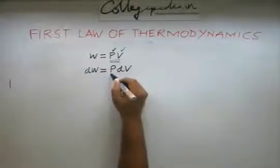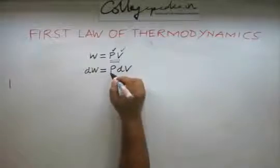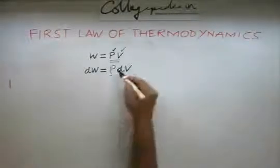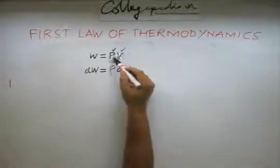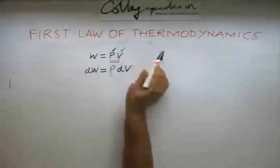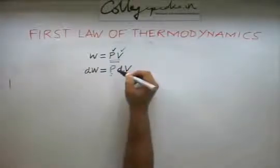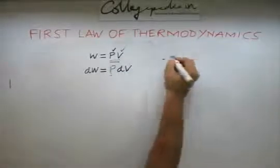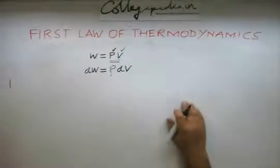Let us say dW is equal to PdV. The reason why I didn't differentiate P is for the time being, I am assuming that P remains same. Had P been changing, I could have said that PV differentiated will give you PdV plus VdP. For the time being, I am saying that pressure is not changing. Other way of looking at it is, you remember the basic piston-cylinder arrangement.